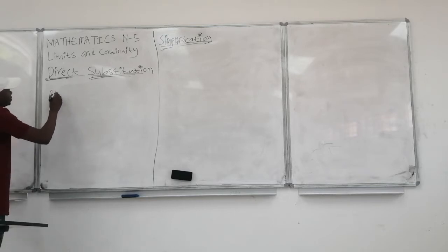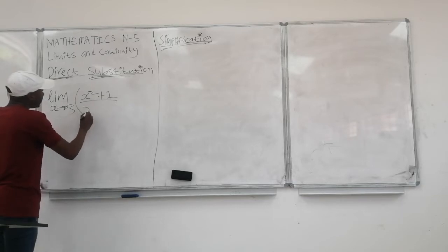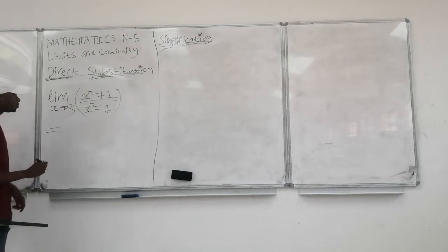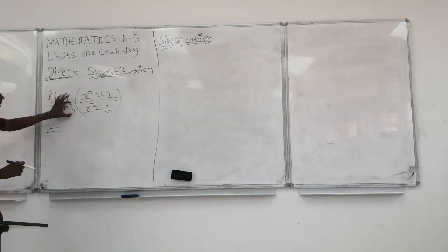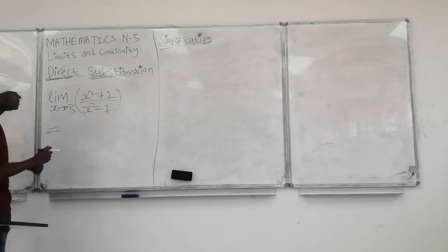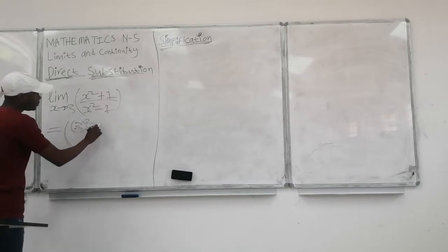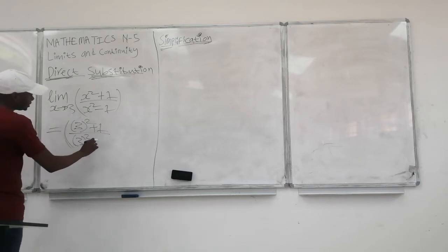The limit when x approaches 3 of x squared plus 1, all over x squared minus 1. This is simple and straightforward — we're just going to do what we call direct substitution. We take this 3 and substitute it where there is x. This is going to be equal to 3 squared plus 1, all over 3 squared minus 1.